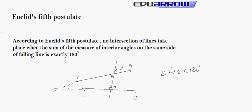No intersection of line takes place when the sum of measures of interior angles on the same side of falling line is exactly 180 degrees. That is, the measure of angle 1 and angle 2 is equal to 180 degrees. In this case, no intersection of line will take place.